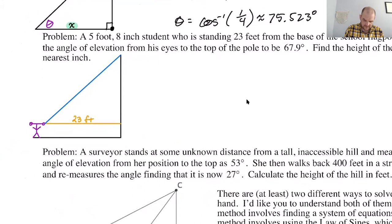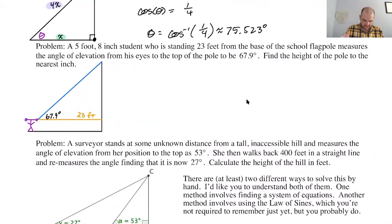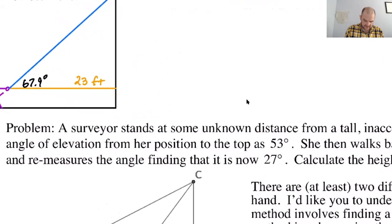All right. So this angle here that we have drawn, that's 23 feet, let's see, this angle is going to be 67.9 degrees. And we are looking for the height of the flagpole. Now the issue is, the student is already five foot eight inches, right? So this distance right here is five feet eight inches, which is what, 68 inches.